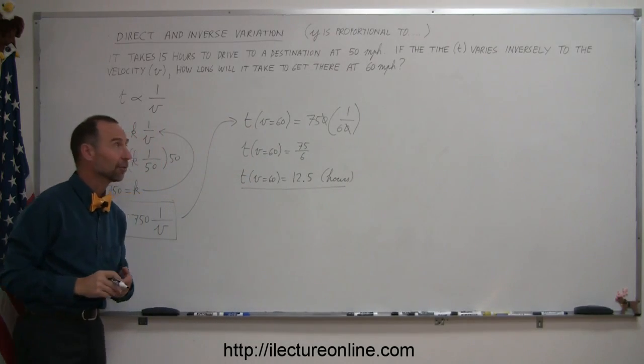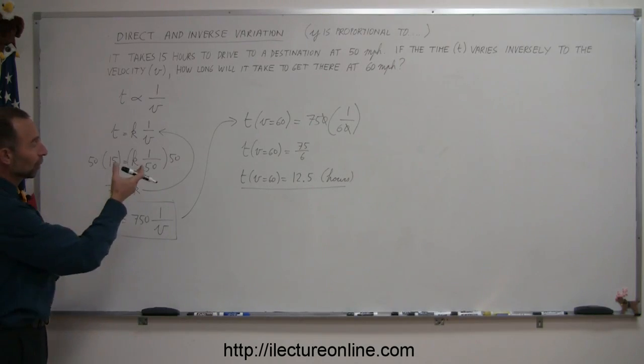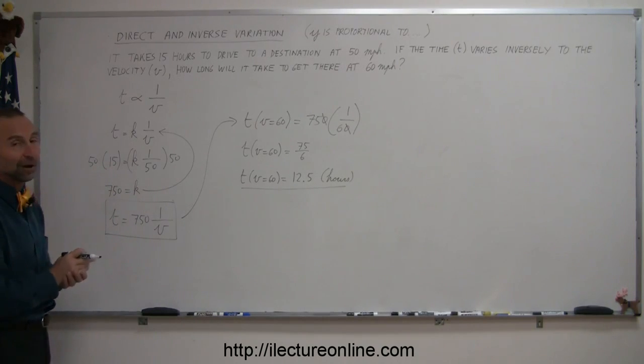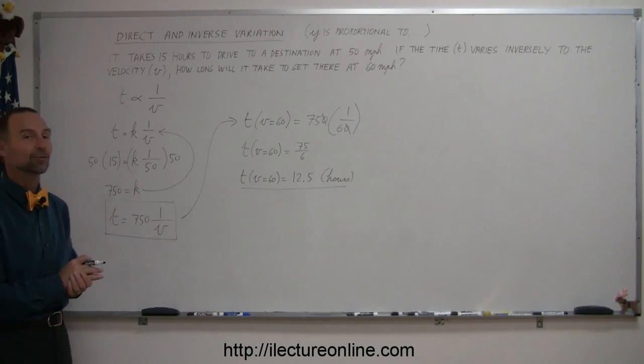All right, which means that if you can get somewhere at 50 miles per hour and it takes you 15 hours to get there, it will only take you 12.5 hours if you drive at 60 miles per hour. And that's how you solve these kinds of problems. All right, that was a nice little example. Let me see if I can dig up a few more for you.